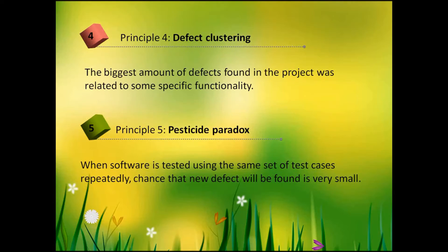Principle four: defect clustering. The biggest amount of defects found in a project is usually related to specific functionality. This happens because some functionality can be complex and tricky, and constantly changing code due to issues can lead to further defects. It is like the Pareto principle applied to software testing: approximately 80% of issues are found in 20% of the modules. The tester's task is to identify such tricky modules and focus efforts there.